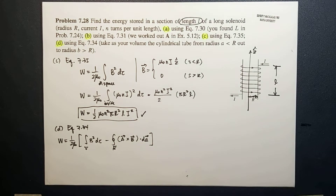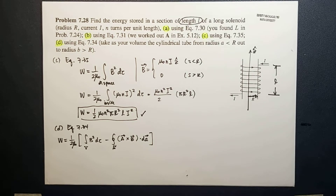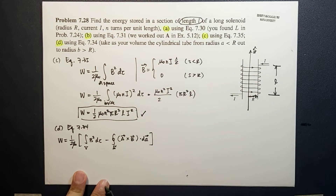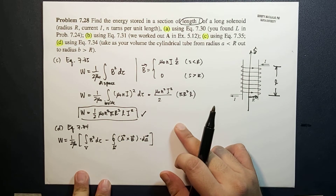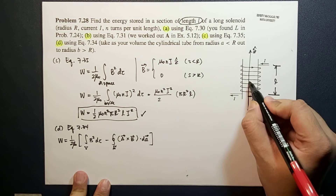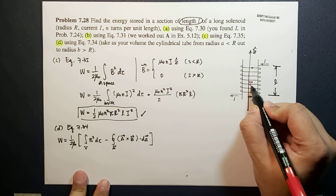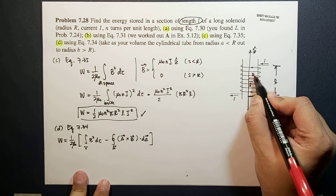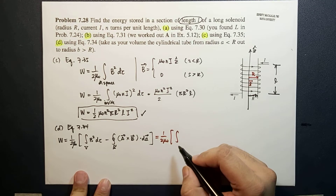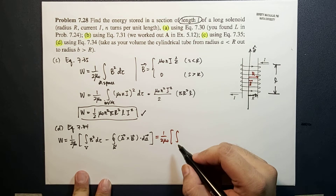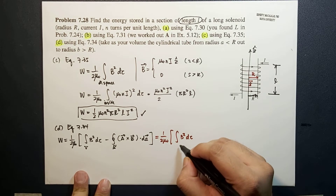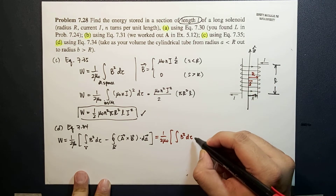In this case, unlike before where our integral was over all space, we are going to restrict the volume integral. The volume integral will be from s equal to a out to s equal to R, so we rewrite this as one over two mu-naught times the integral of B squared d-tau where d-tau is expressed in terms of ds.